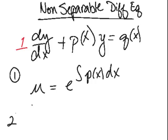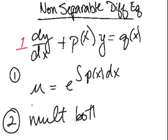And then, after you find what your integrating factor is, you're going to multiply both sides by that integrating factor.